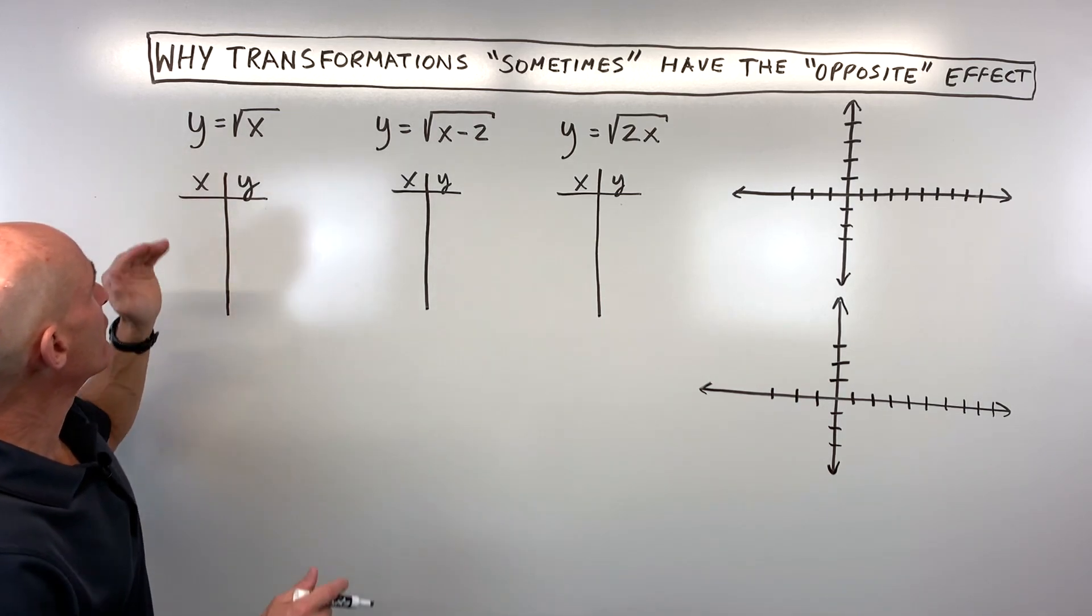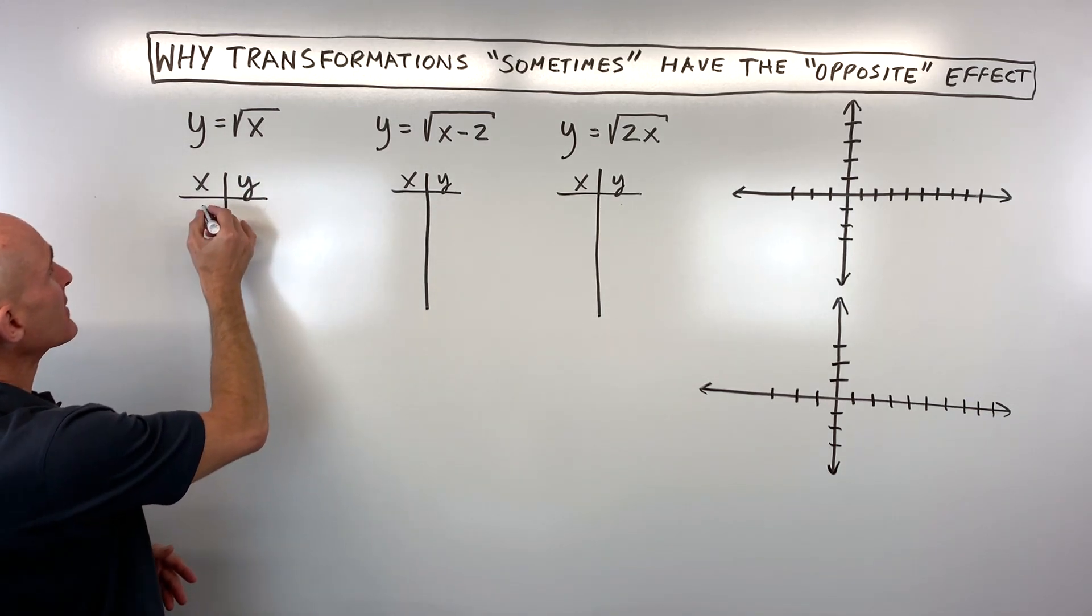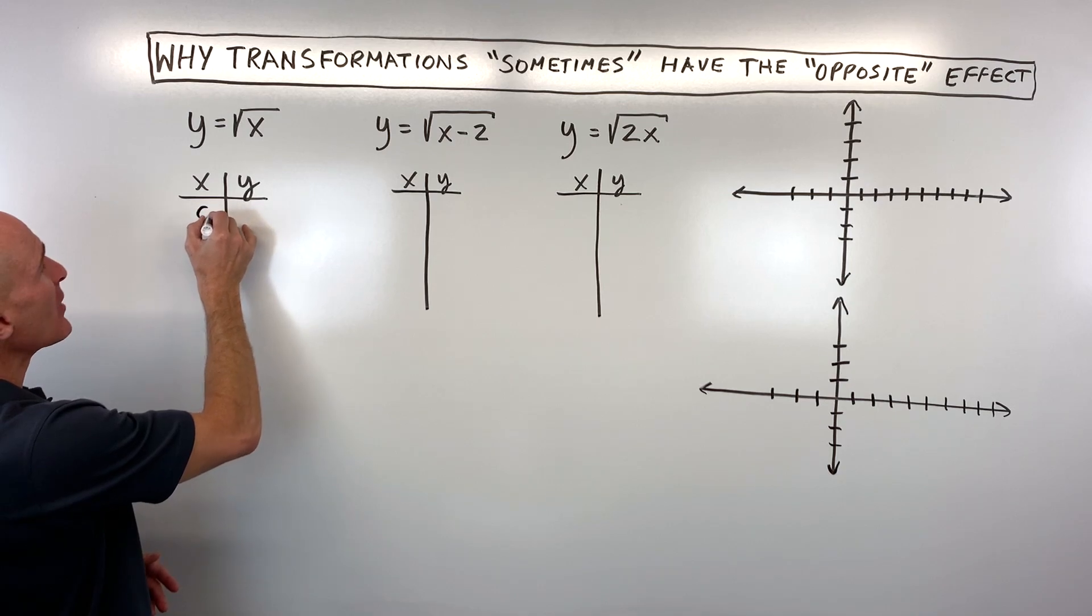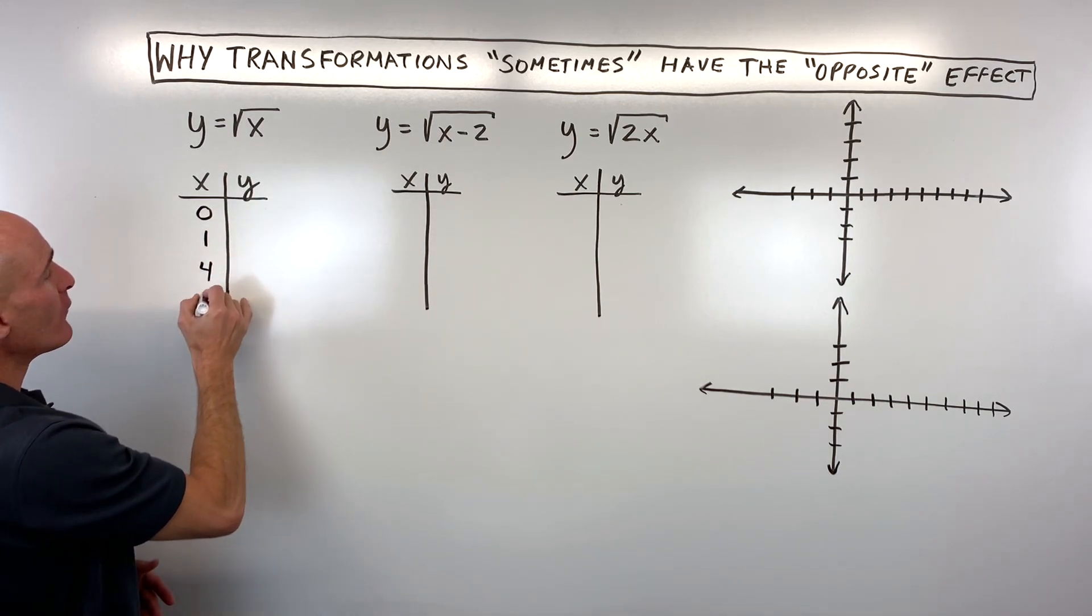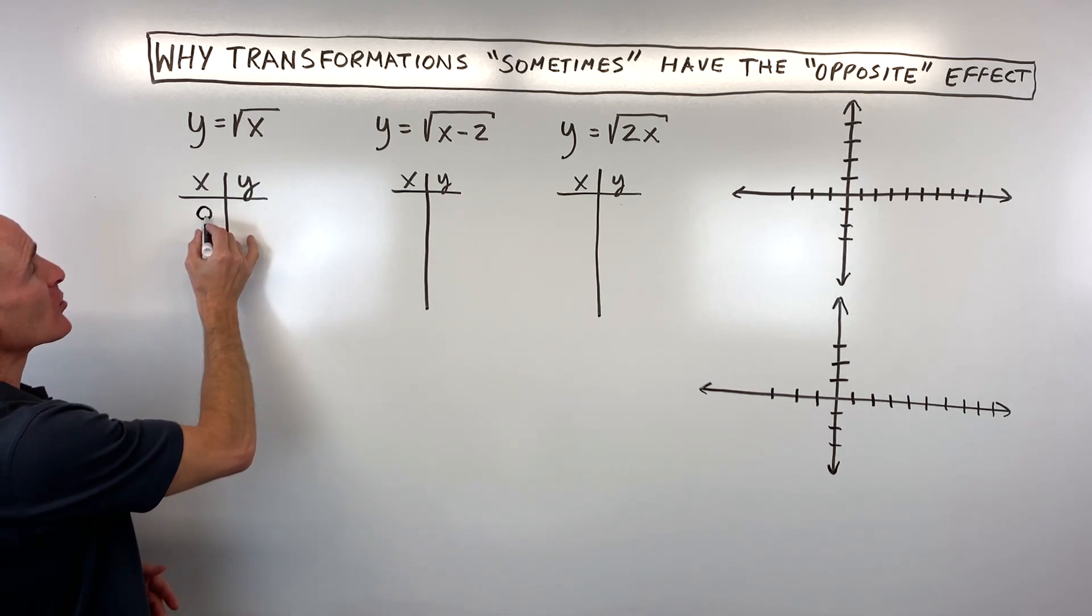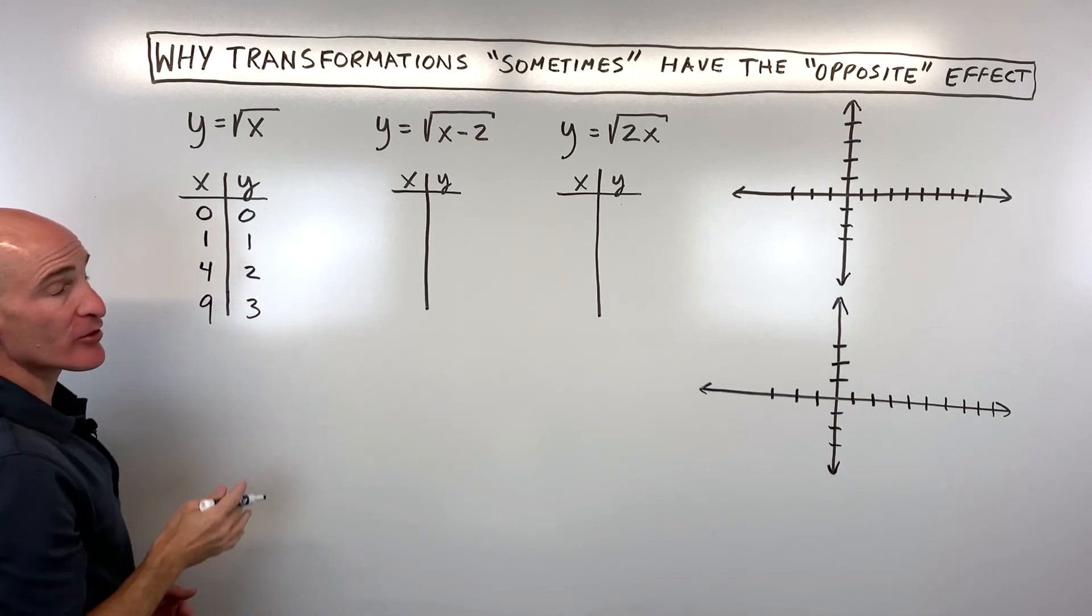Let's take a look at a parent function like y = √x. We can make a table by plotting some points. Let's put in values for x that are easy to take the square root of: 0, 1, 4, and 9. The square root of 0 is 0, of 1 is 1, of 4 is 2, and of 9 is 3.